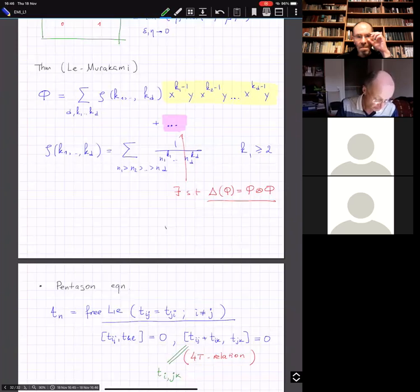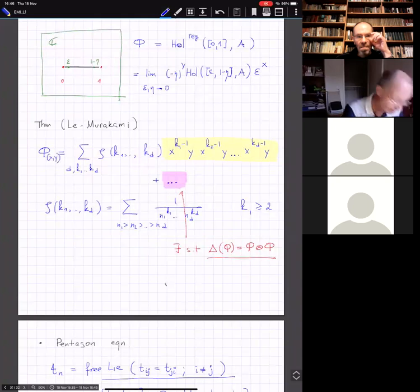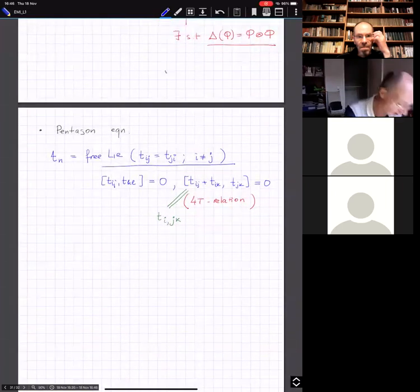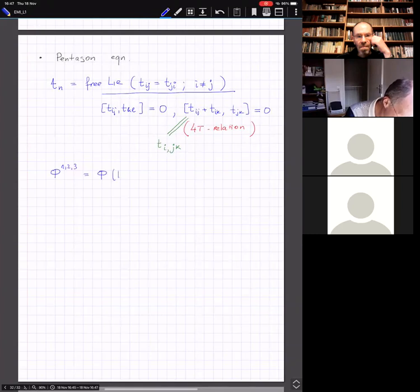And similarly, for instance, phi_1,2,3,4. This will be phi T_1,2,3, T_3,4. So the pentagon equation is the following equation. Well, I hope I don't make a mistake, even though I often do. So there is a phi, phi, phi. But these are not arbitrary phi's, right? These are phi's where you distribute those indices in some way. And this is equal to phi_1,2,3,4, phi_1,2,3,4.